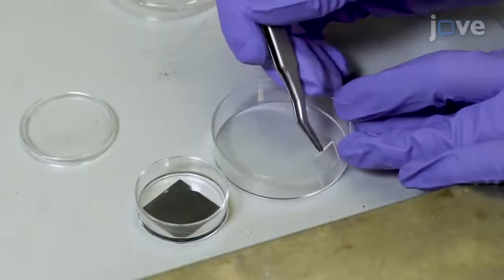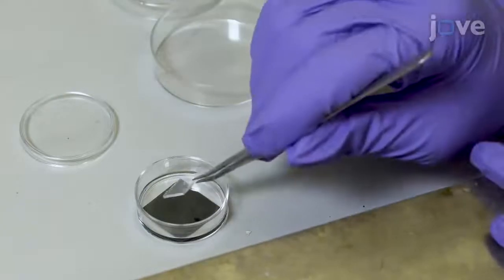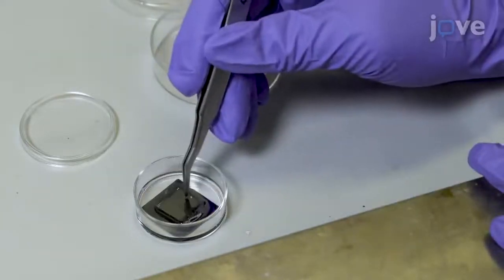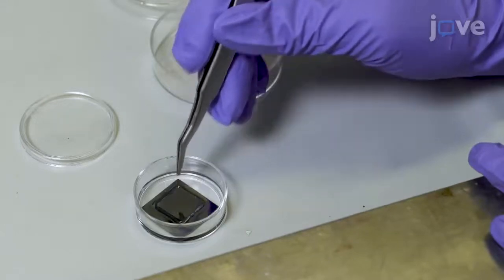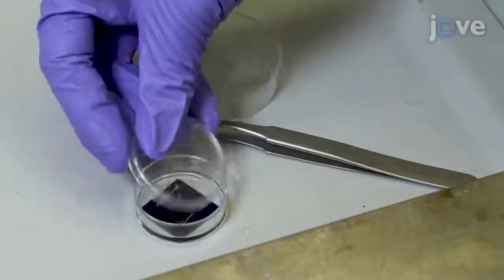After degassing, carefully place the slide on the PDMS with the treated side facing down. Gently press the slide onto the silicon master to remove trapped air and to ensure that a uniform layer of PDMS is sandwiched between the master and the slide.